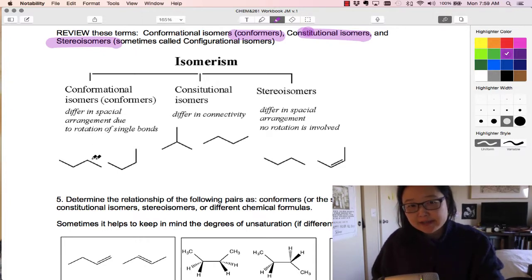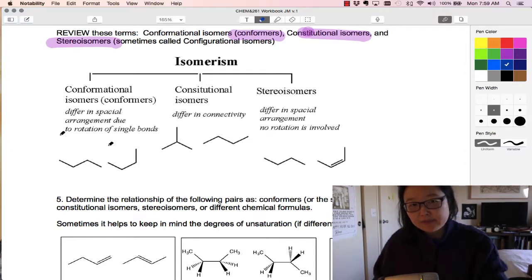Here, conformational isomers, or conformers, see same connectivity here, just different rotation. So here we have conformational isomers, so same connectivity, but you see there was a different rotation around one of the bonds. Here, constitutional, because they differ in connectivity.